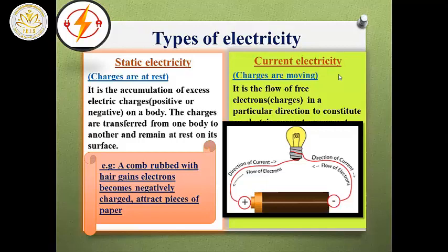Current electricity, or dynamic electricity, is the flow of free electrons or charges in a particular direction. As you can see in these electric circuits, we have the source of electricity — the battery. In the battery we have a negative pole and a positive pole, and the electrons flow from the negative pole to the positive pole in a closed circuit.